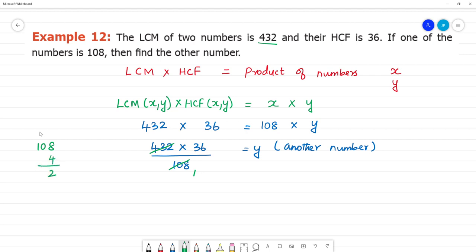8 fours are 32, remainder 3, 0, 14 is 4. So how many times? 4 times. So what is 36 multiplied by 4? 6 fours are 24, remainder 2, 4, 3 is 12 plus 1, 14.